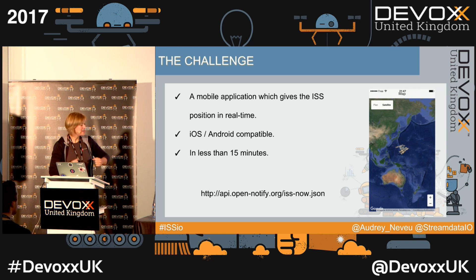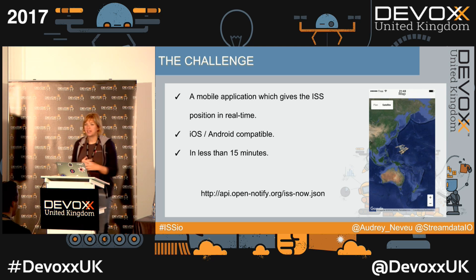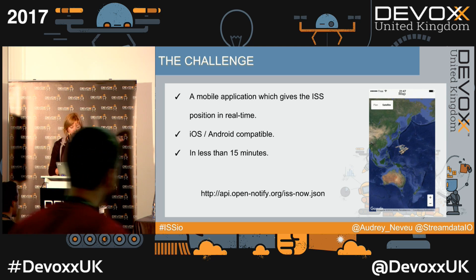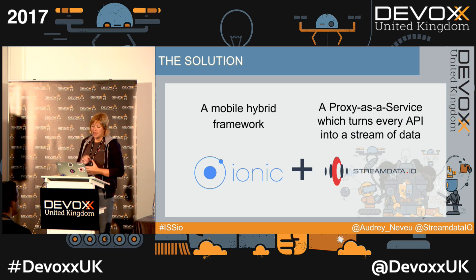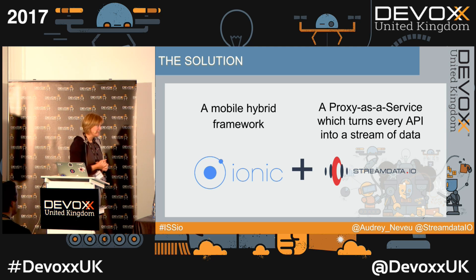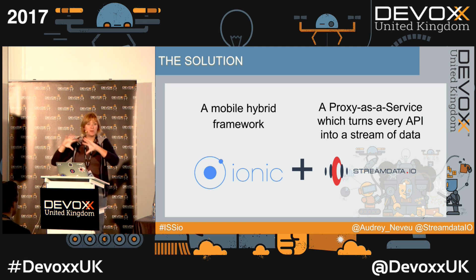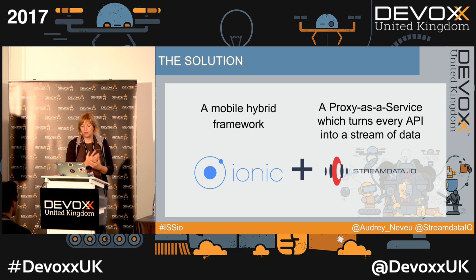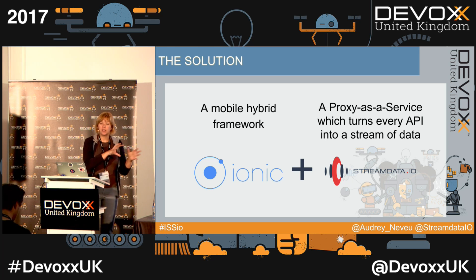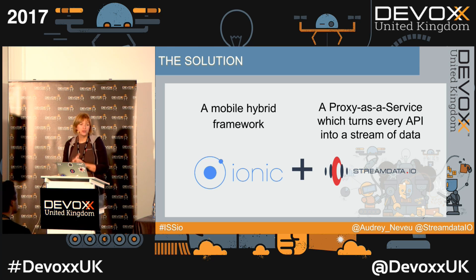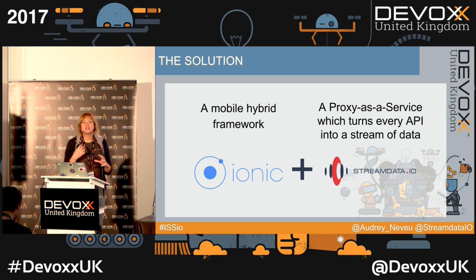To win my bet, I'm going to use this API which is open source, available on GitHub — you can have a look at the code, really nice one. My solution to win the challenge is to use Ionic for the mobile hybrid part of the application, which is a mobile hybrid framework, and for the real-time part I'm going to use our product, Streamdata, which is a proxy available as a SaaS that turns any JSON API into a stream of data.